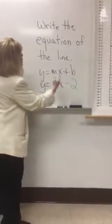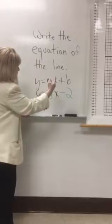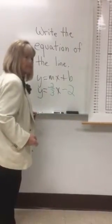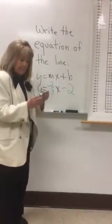So, the answer to this question, write the equation of the line. The answer is Y equals negative 2 thirds X minus 2. That's the answer. And it's a wrap. Kill it.